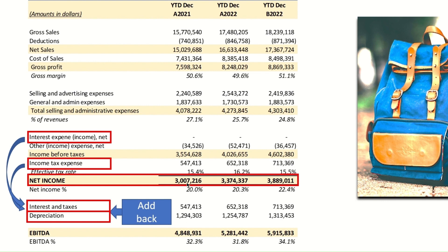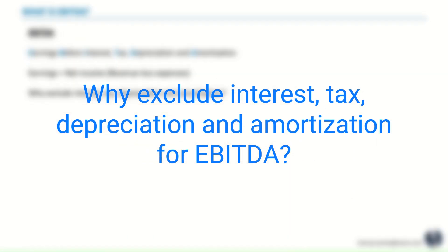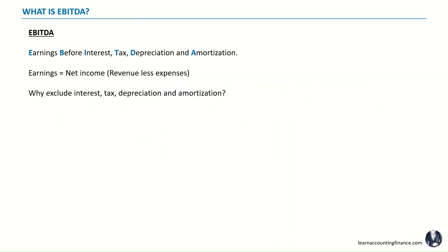Our net income was 3 million for the year 2021. We added back interest and tax expenses of 547, and then the depreciation amount is $1.3 million roughly. So we arrive at finally our EBITDA. Interest, tax, depreciation, and amortization are excluded.